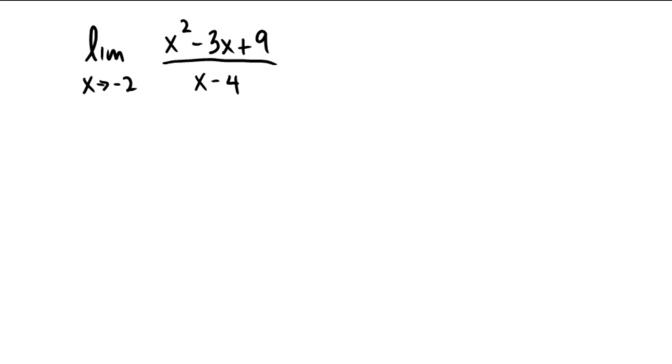Assuming you paused it and gave it a shot, the closest you could ever get to negative 2 would be exactly negative 2. So in the numerator, we're going to have negative 2 squared minus 3 times negative 2 plus 9, and in the bottom, we'll have negative 2 minus 4.